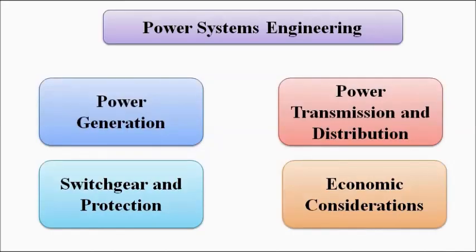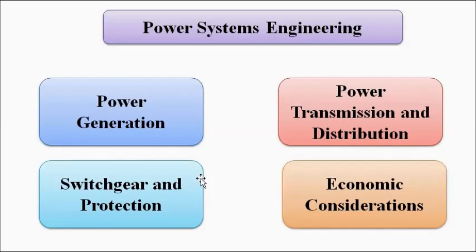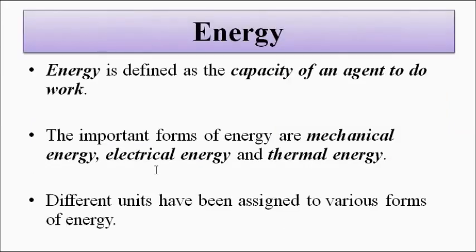Power systems engineering deals with four main aspects: power generation, power transmission and distribution, switchgear and protection, and economic considerations. In order to quantify and represent all of these aspects — how much power is generated, its efficiency, and the various cost aspects — we need some kind of units and number values.